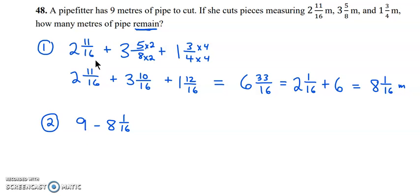So 9 drops down to 8, and because our denominator is 16, we're going to have 16/16. That's my 1 plus the 8 gives us the 9, and then we can now subtract the 8 and the 1/16. We subtract our whole numbers. 8 minus 8 is nothing, and 16 minus 1 is 15. So we have 15/16 of a meter remaining.